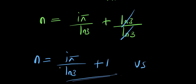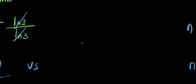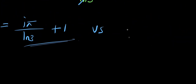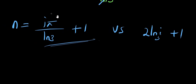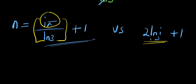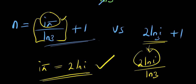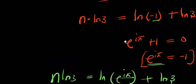Comparing the two solutions: the first gives n equals 2 times natural log of i divided by natural log of 3, plus 1, while the second gives n equals i times pi divided by natural log of 3, plus 1. The only difference is that 2 times natural log of i is the same thing as i times pi, so both solutions are obviously the same, just expressed differently. That's it, guys — thank you and goodbye.